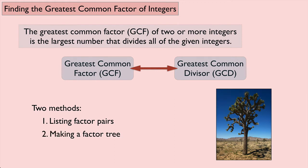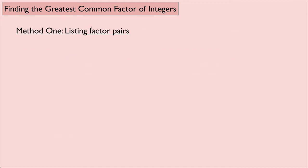We're going to look at each of these methods for a specific example. So let's look at Method 1: listing factor pairs. Here's the example — find the greatest common factor of 45 and 60.